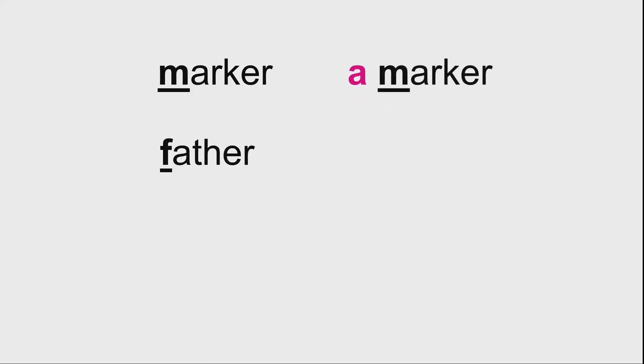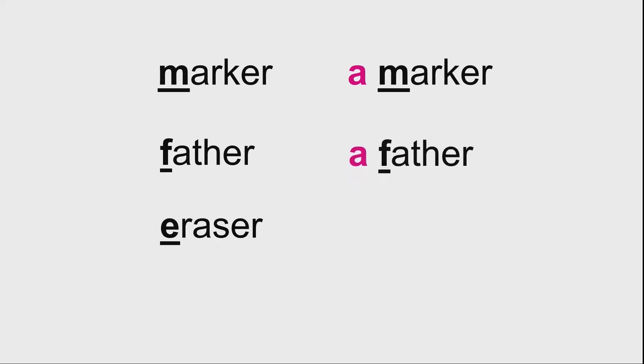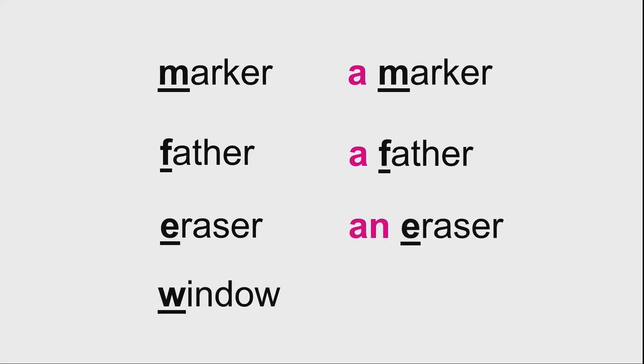Now, tell me please. Do we use A if the word starts with the vowel? No, we don't. Do we use AN? Yes, we do. Now, I say a word and you say A or AN, okay? Marker — a marker. Father — a father. Eraser — an eraser. Window — a window.